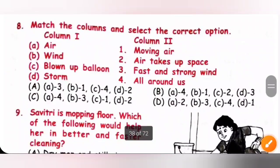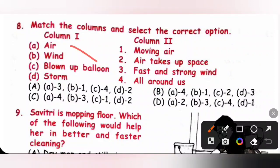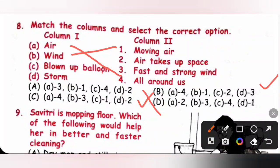Question 8: Match the columns. Air — all around us (A4). Wind — moving air. Storm — fast and strong wind. Blow up balloon — air takes up space. So the matching is A4, B1, C2, D3. Option B is the correct answer.